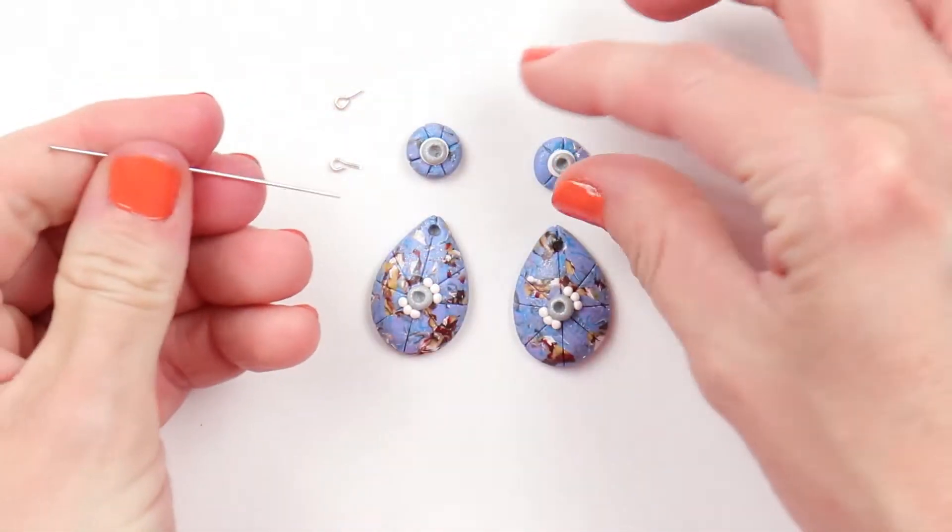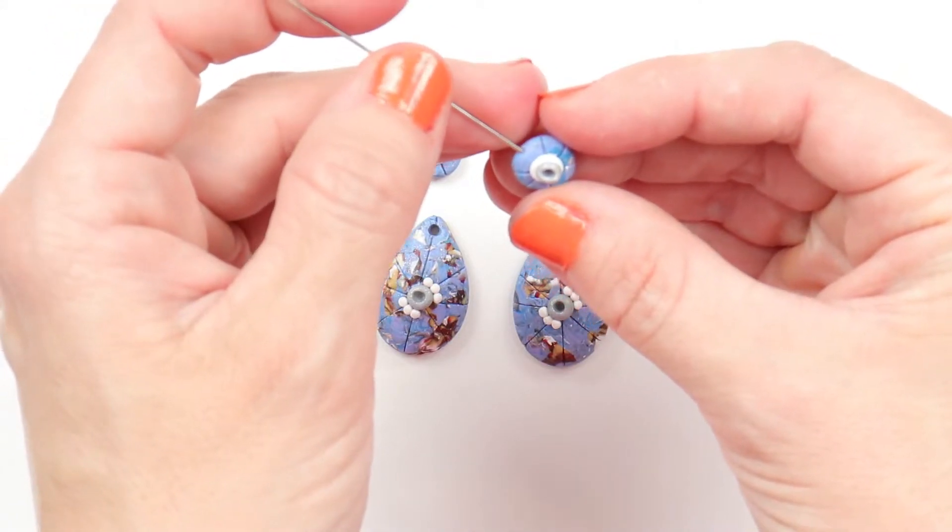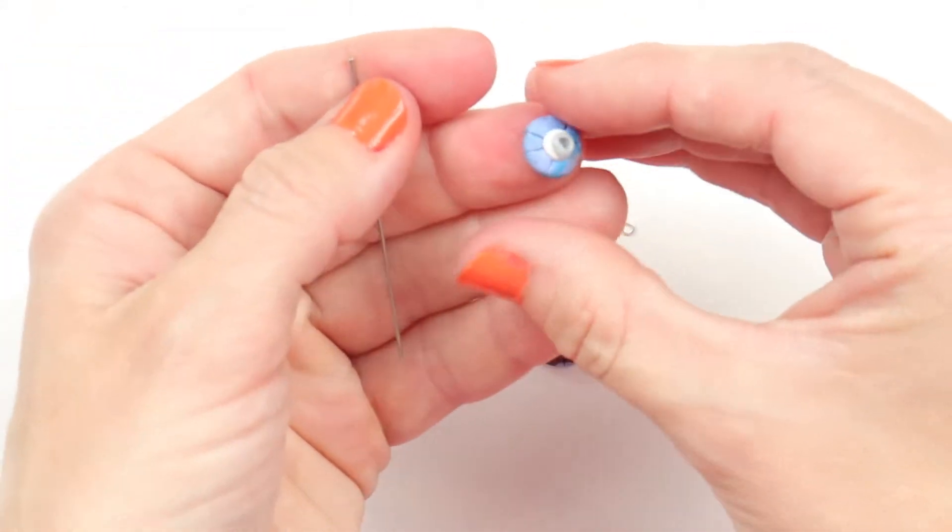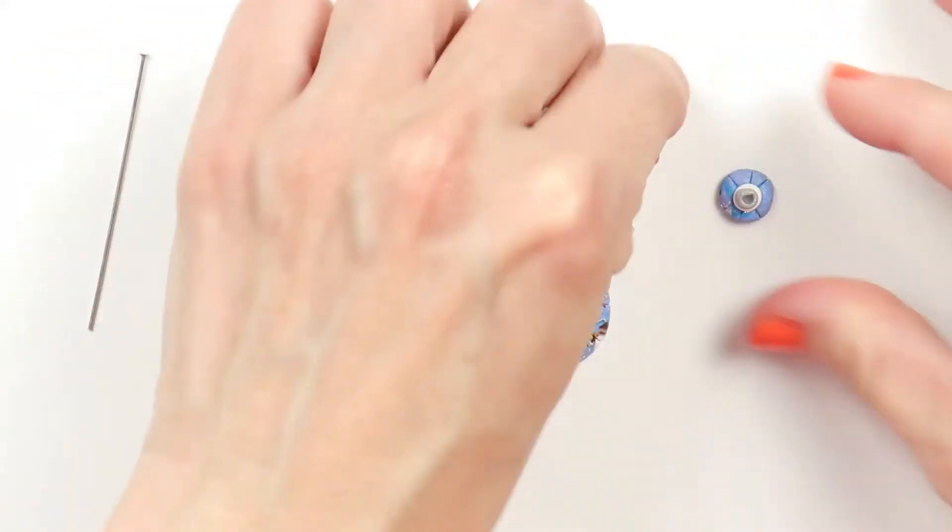Pre-poke your eye hook holes. You'll want one at the top of what would be your circle and one at the bottom. Then place in your eye hooks.